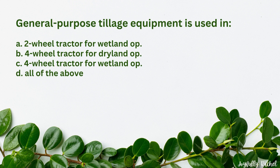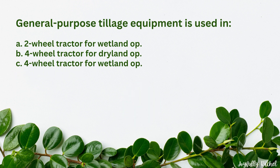General purpose tillage equipment is used in: A. Two-wheel tractor for wetland operations, B. Four-wheel tractor for dryland operations, C. Four-wheel tractor for wetland operations, D. All of the above. The answer is D. All of the above.